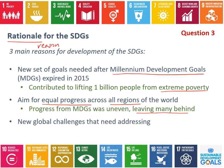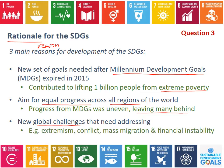The third rationale is that new global challenges were emerging. The issues that existed when the Millennium Development Goals were written in 2000 had changed. Some of the new issues coming up were to do with extremism — terrorism and extreme violence. There was a big increase in conflict, and mass migration is a common consequence of conflict. There were also issues around financial instability, and climate change became an even more urgent issue. These new challenges needed to be addressed.